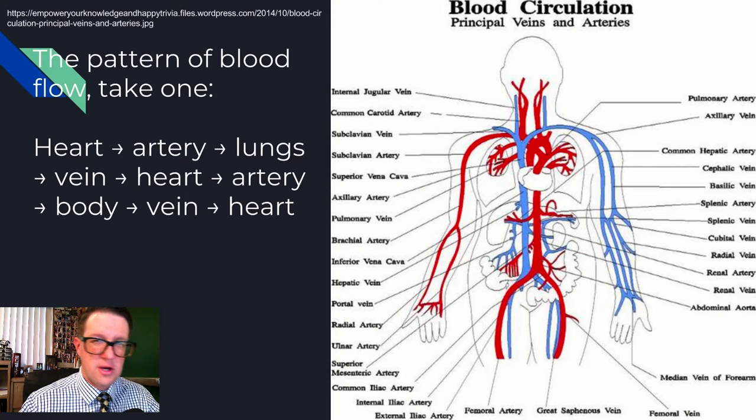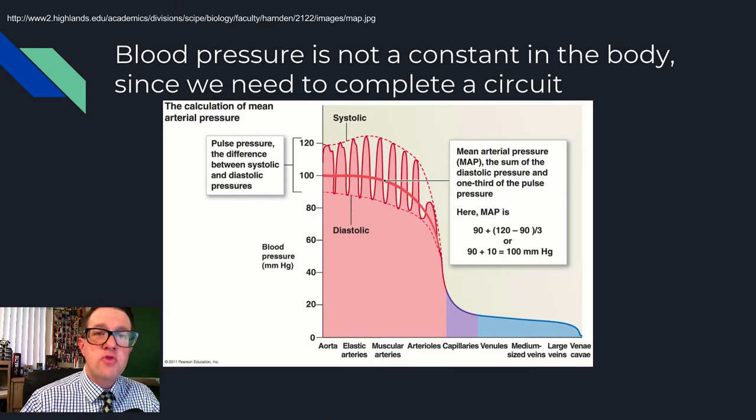To keep driving this down, as we move through all those parts, we need to have a pressure gradient. We need to have a difference in pressure. And what you notice when you look at this graph is it starts out with the pressure in the arteries being relatively flat.